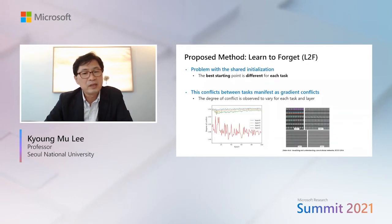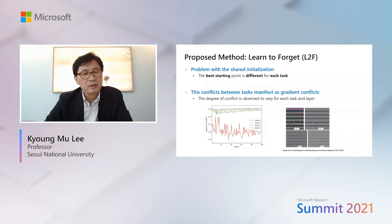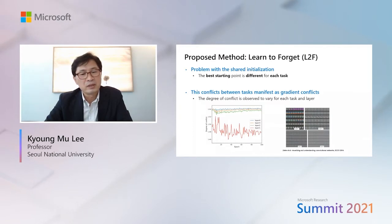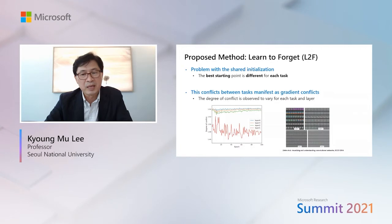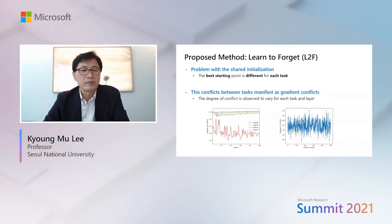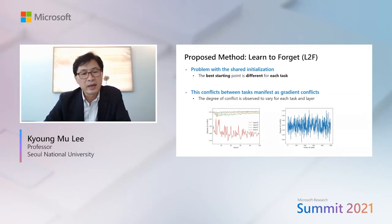Through analysis of conflicts, we observe that the degree of conflict differs largely among layers. In particular, deeper layers seem to have a large degree of conflict, while shallow layers have a smaller degree of conflict. This analysis is consistent with the well-known observation from prior work that lower layers learn general representations while deeper layers encode task-specific features. We also observe that the degree of conflict differs among tasks, implying each task has a different degree of preference for the initialization.